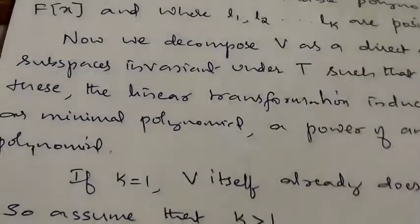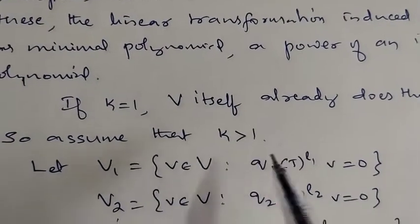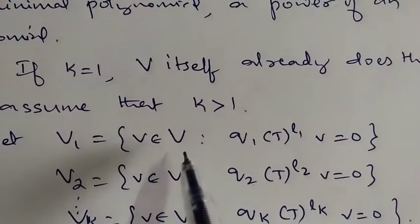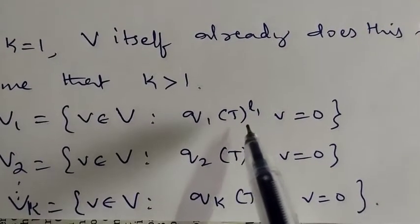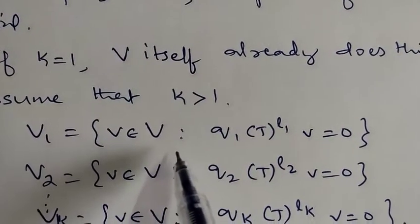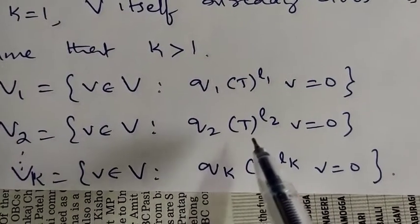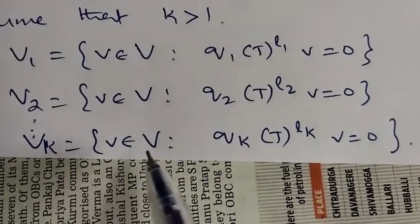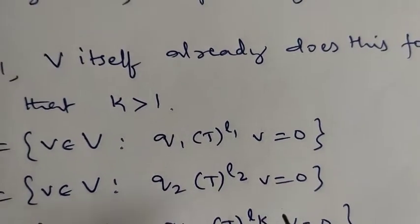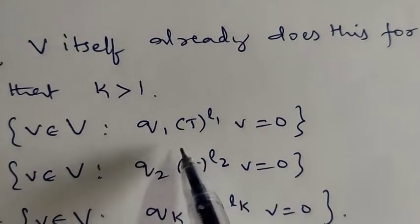If k = 1, V itself already does this. So assume k > 1. Define V1 as the set of all vectors V in V such that Q1(T)^L1(V) = 0; V2 as the set of all V in V such that Q2(T)^L2(V) = 0; and so on, Vk as all V such that Qk(T)^Lk(V) = 0. We decompose V as V1 + V2 + ... + Vk.